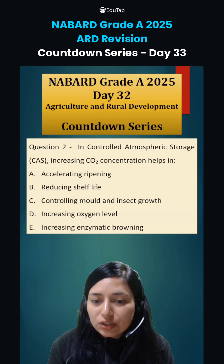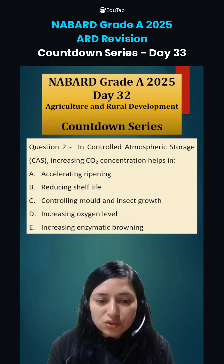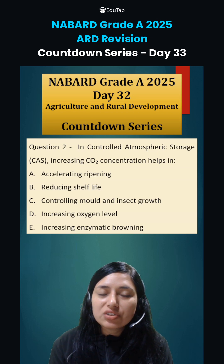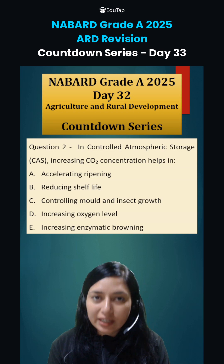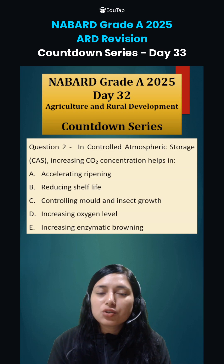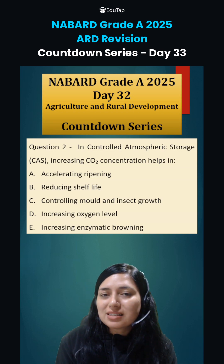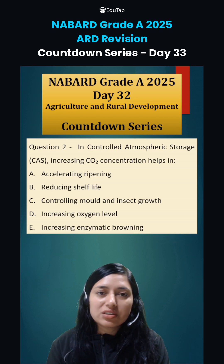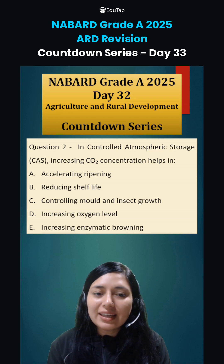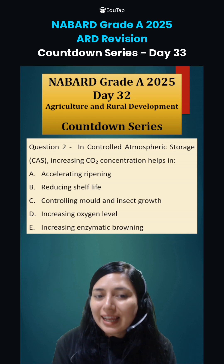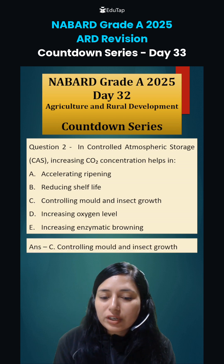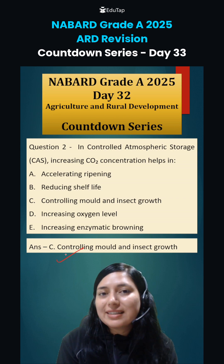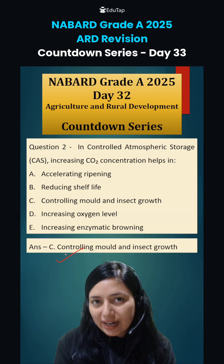Next question was: in controlled atmospheric storage, increasing CO2 concentration helps in. In the CAS system, if we increase CO2 concentration, it will help in controlling mold and insect growth — that is the right answer.